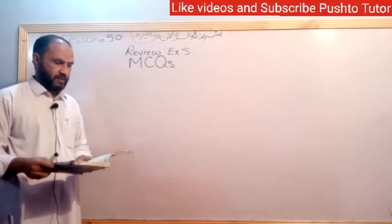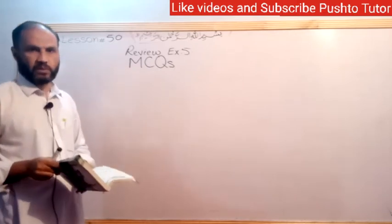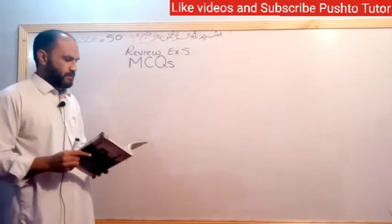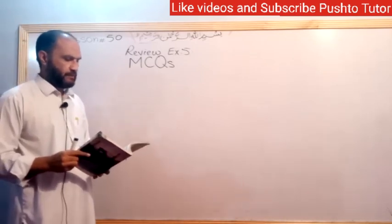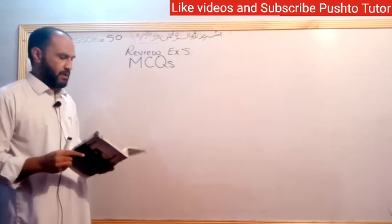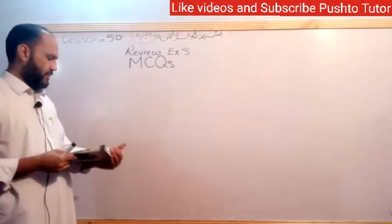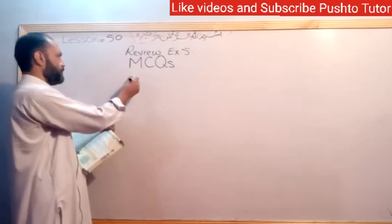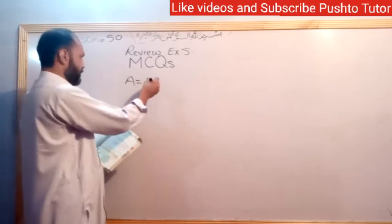Now let's read the MCQs. At the end of each question four circles are given, fill in the correct circle only. Question number one: if A equals 1, 2, 3...